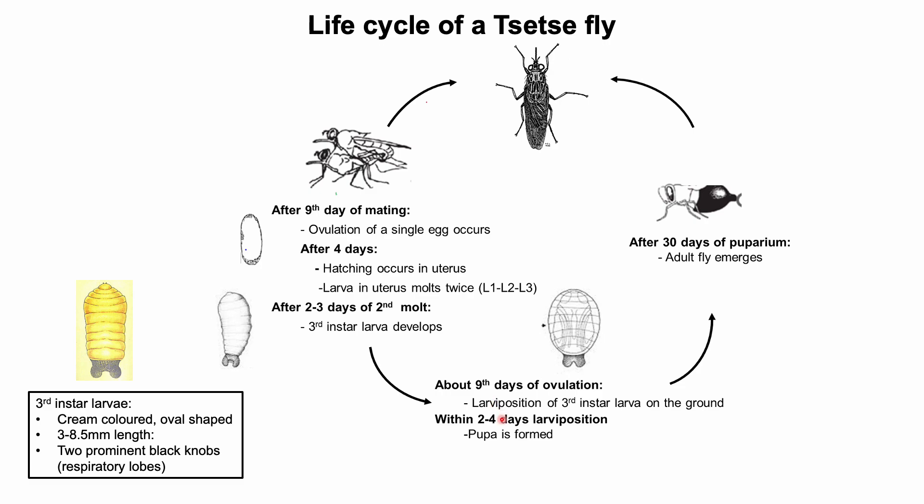The larva then quickly burrows into soil up to 2.5 centimeters in depth within a few hours of deposition, and becomes an immobile, brown to black puparium.